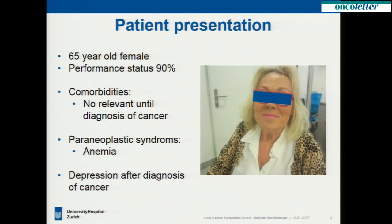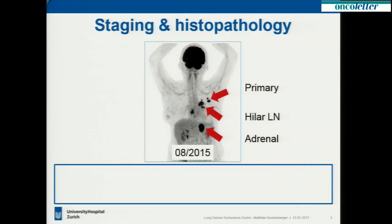A 65-year-old female who presented in quite good performance status — 90% — with no relevant comorbidities until diagnosis of cancer. She had some paraneoplastic syndrome and anemia, and she developed a depressive disorder after the diagnosis. This is a PET scan done for staging of the patient, and you can immediately see that this patient doesn't fit into the locally advanced session — this is metastatic disease. We have a primary, hilar lymph nodes, and a quite large adrenal metastasis.